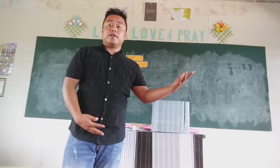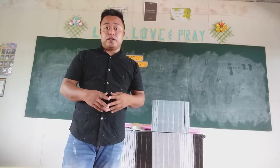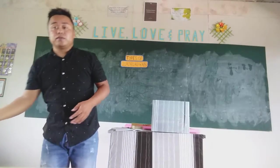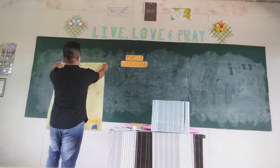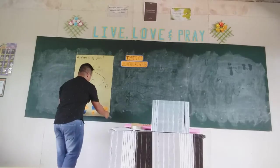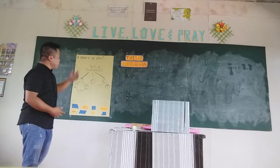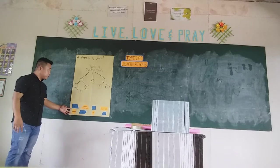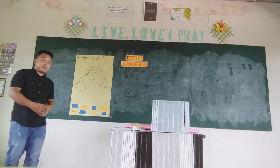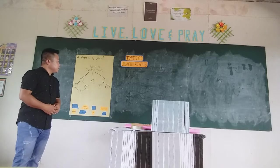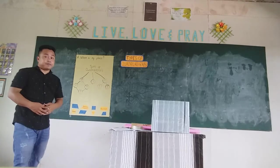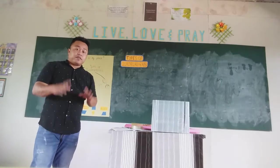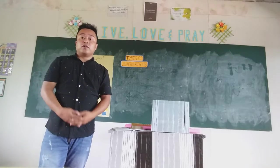Each group will select a leader and a secretary. The leader will be the one to facilitate, while the secretary will be the one to check or record the level of participation of each member. What you're going to do within your group activity is complete this concept map, entitled 'Where are my days?' Using the different types of quadrilaterals provided, you're going to fill in each part of your concept map.